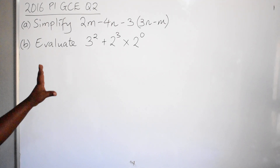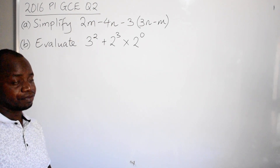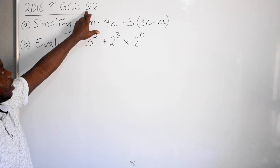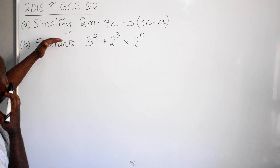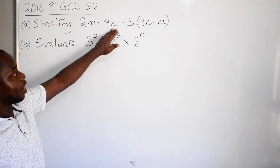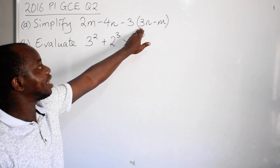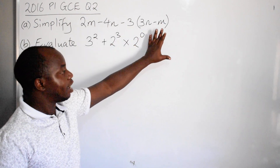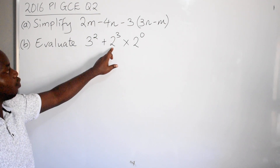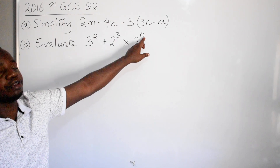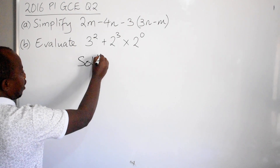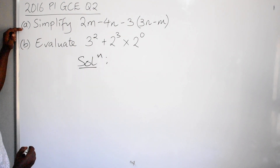Hello everyone. Let's look at these two questions on the board coming from the 2016 Paper 1 GCE. They come from question number 2, which has two parts. We have Part A: simplify, and Part B: evaluate. So let's see how we can answer these two questions. We start with the first one.